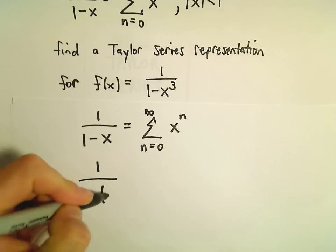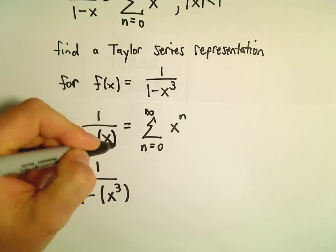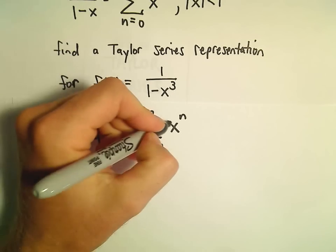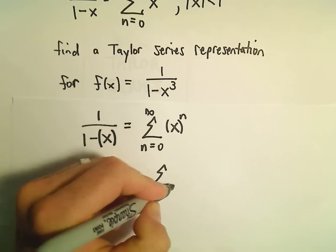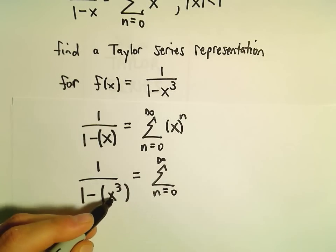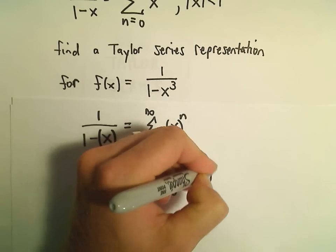So we want the series representation for 1/(1-x³). The way I think about it is: whatever is being subtracted away, that's what goes inside the parentheses. So in this case we'll have the series from n=0 to infinity, but instead of just x^n, now we're going to have (x³)^n.